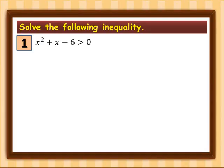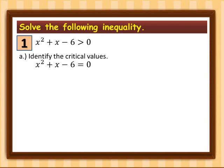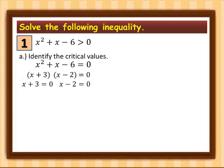First we are going to look for the critical values. In solving for the critical values, we simply change the greater than to equal to, giving us x² + x − 6 = 0. Then solve using any method. I will use factoring: (x + 3)(x − 2) = 0. Equating each factor to zero gives x = −3 and x = 2.